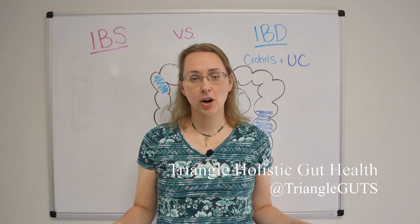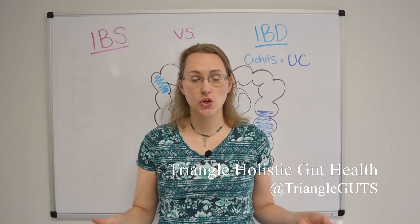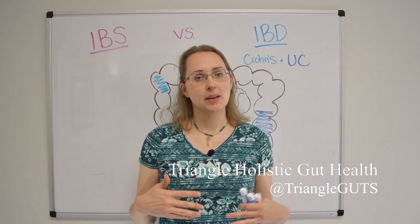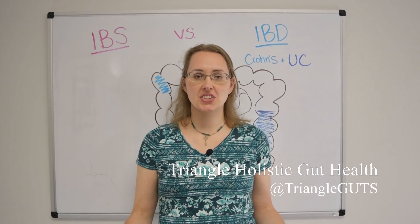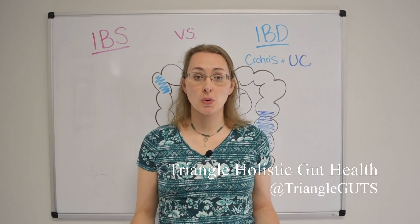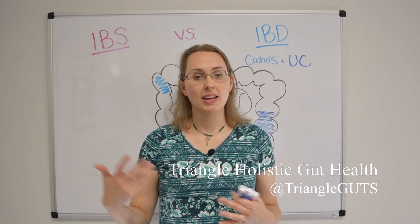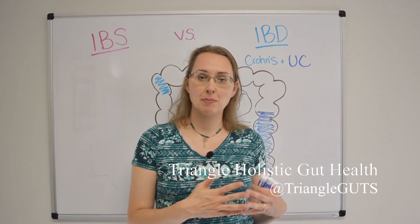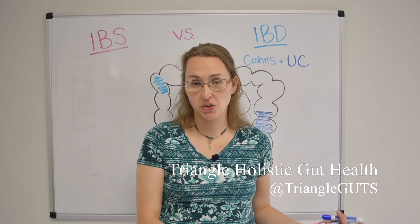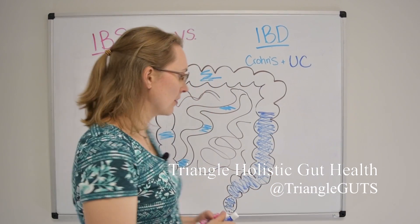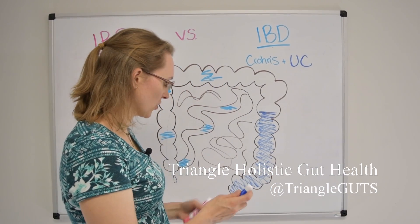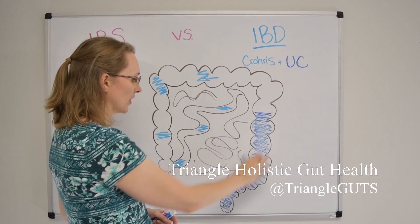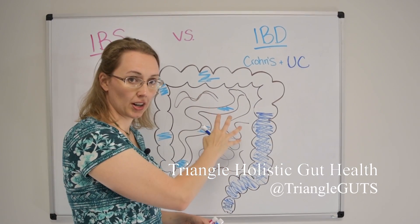First, we need to talk about what part of the digestive tube is most affected in all three of these conditions, and then we can backpedal and talk about symptom presentation and how you as an individual will know if you most likely have IBS, IBD, and if IBD, which of the two types that we're talking about today. I've drawn a couple of pictures here — we've got the colon coming and wrapping around, and the small intestines are in the middle.